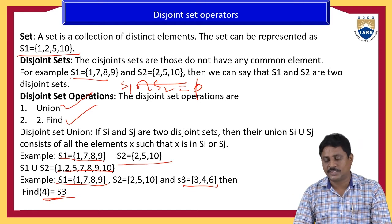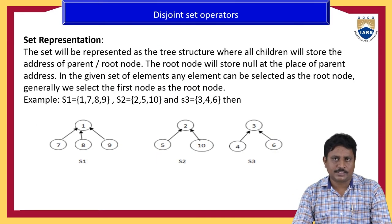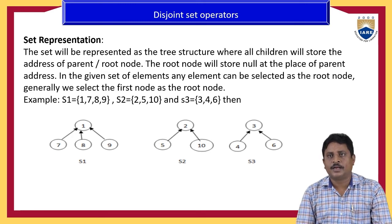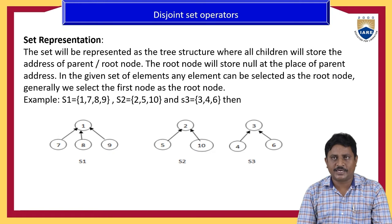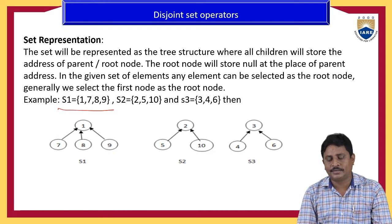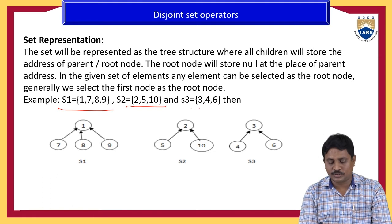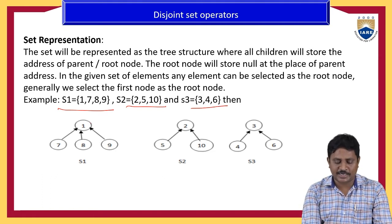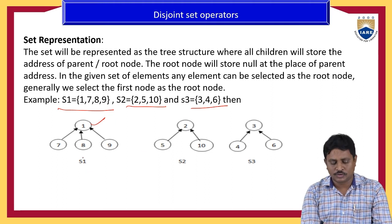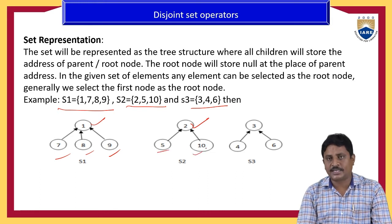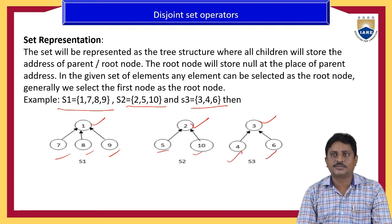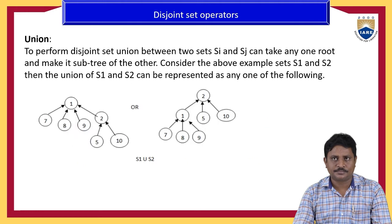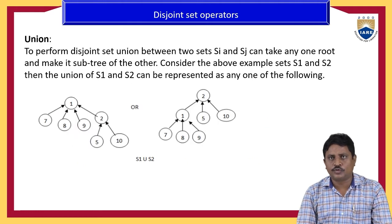The set representation in terms of a tree: S1 equals one, seven, eight, nine; S2 equals five, ten; S3 equals three, four, six. In S1, one is the parent node and the remaining are child nodes. In S2, two is the parent node and five and ten are child nodes. In S3, three is the parent node and four and six are child nodes.